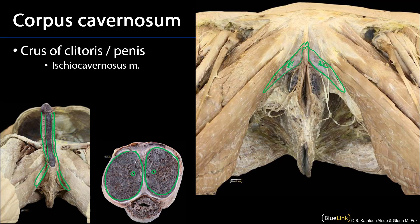The ischiocavernosus muscle is going to cover over the crura. We can see it very well here at the root of the penis — you can see those muscles right there — and they have been removed here from the crura of the clitoris so that we may see them, but they would lie superficially. Much like the bulbospongiosus muscle, the ischiocavernosus muscles apply pressure to the erectile tissue to help maintain tumescence and an erection, and help slow the flow of blood from the veins draining these tissues to help maintain tumescence or an erection.